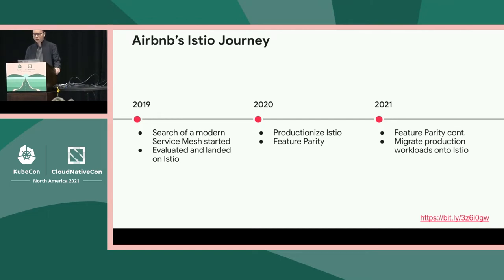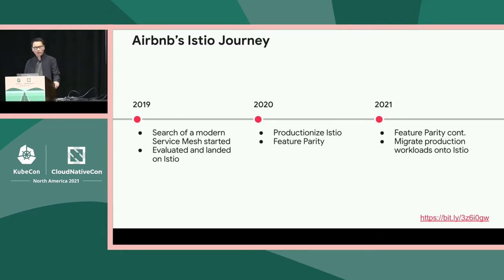This year, after successfully adopting Istio across different kinds of workloads and operating it in production for a few quarters, we established enough confidence in both Istio itself and our operational expertise. We started our full-speed migration to Istio. Currently, we have connected almost all of our thousand microservices to Istio and migrated about a third of production traffic. Our plan is to fully migrate and sunset our legacy service mesh next year.